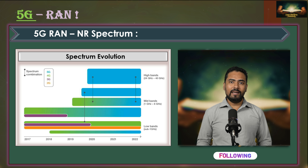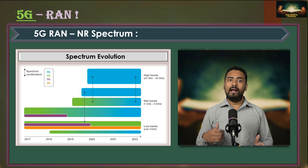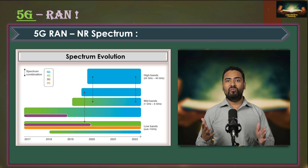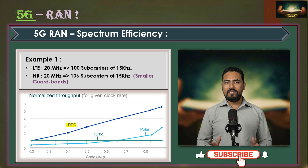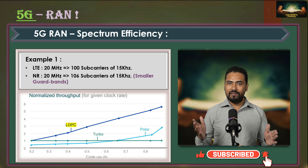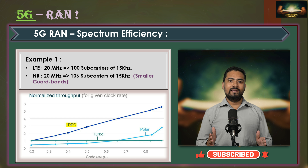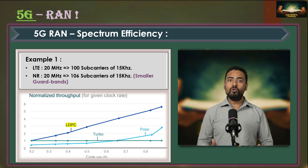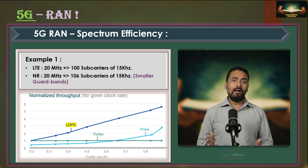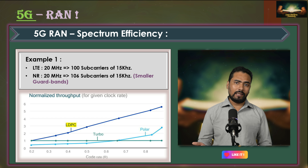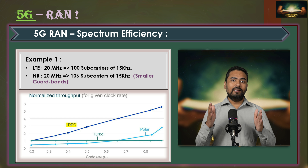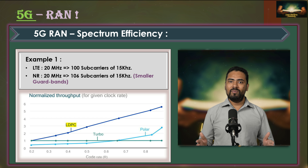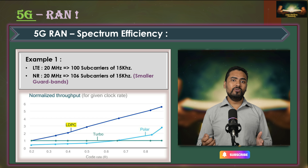It's important to understand that 5G NR brings higher spectral efficiency through different mechanisms. In this example of 20 MHz spectrum, LTE has 100 subcarriers each 15 KHz wide, whereas NR can accommodate 106 subcarriers from the same 20 MHz bandwidth at the same 15 KHz spacing. This happens due to reduced guard bands.